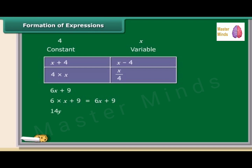Similarly, 14Y − 30 is obtained by first multiplying Y by 14 and then subtracting 30 from the product. These expressions were obtained by combining variables with constants. You can also obtain expressions by combining variables with themselves or with other variables.